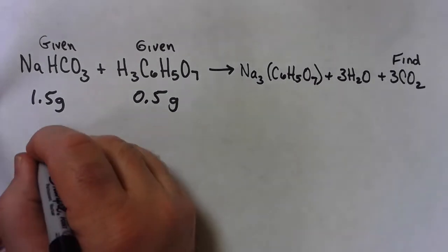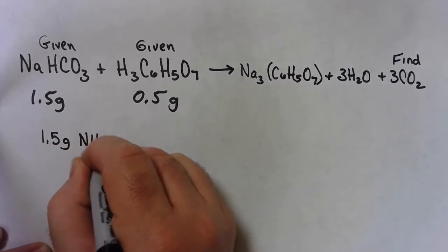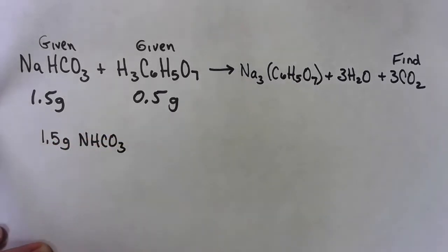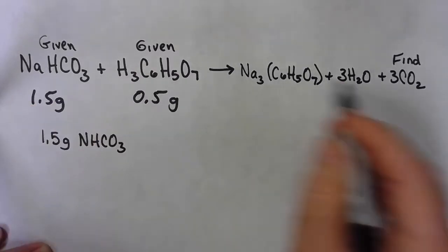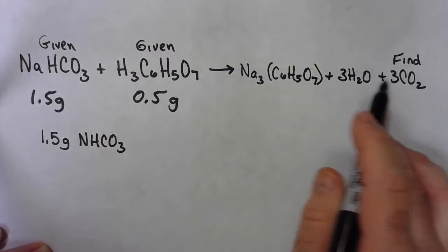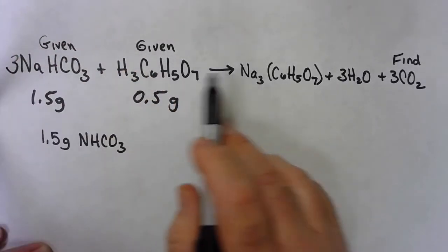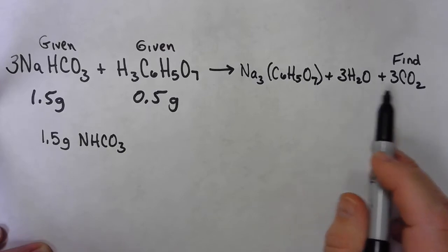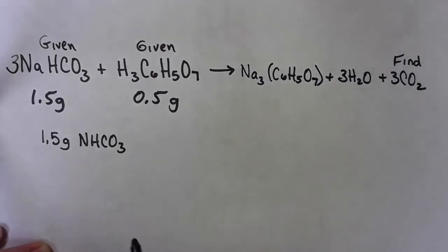So we'll start here with my 1.5 grams of sodium bicarbonate. My first step, I've got my balanced equation here. We did this in an earlier video. It took three of those, one of those, one of those, made three, and three. We did that in an earlier video.